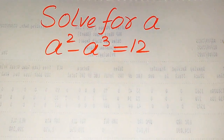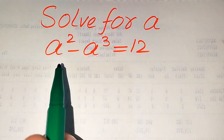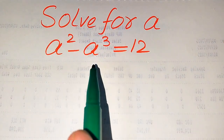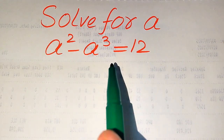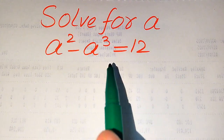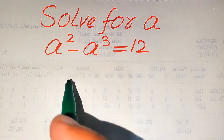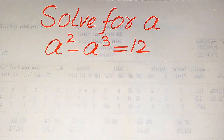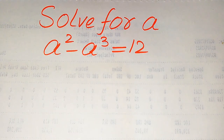Hello everyone. How to solve this problem for the values of a, if we have a squared minus a cubed equals 12. We solve this problem for the values of a. This is a cubic equation, which means it has three roots, and we need to find all three roots.